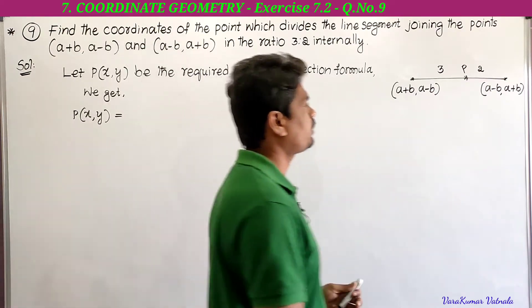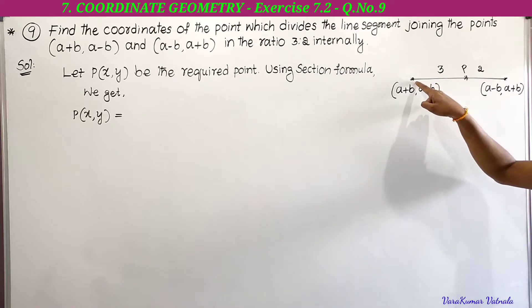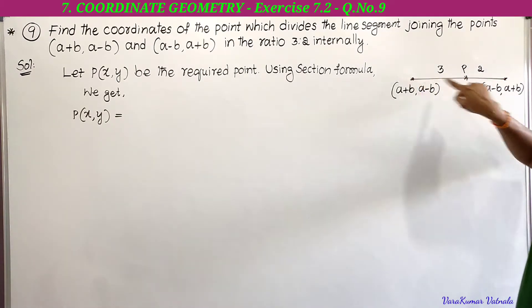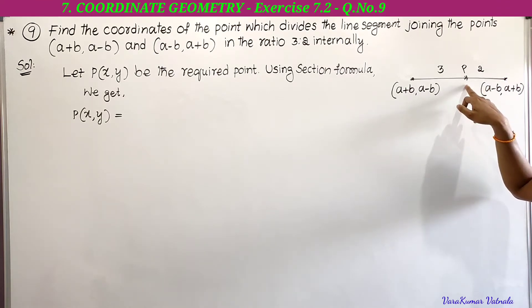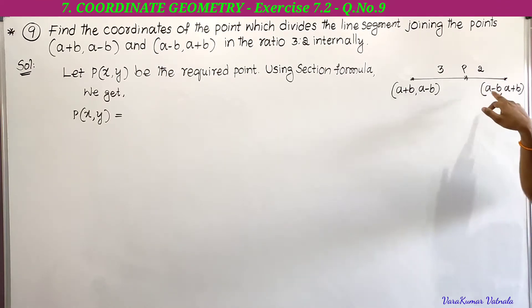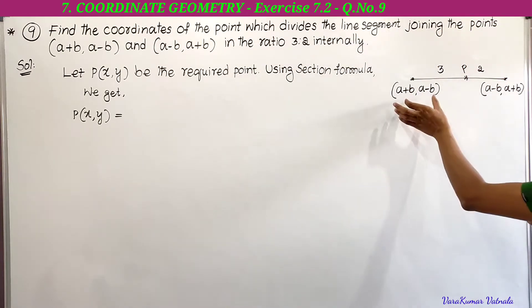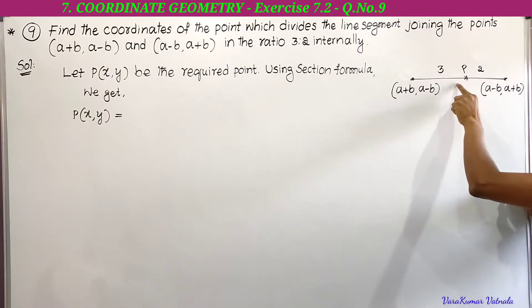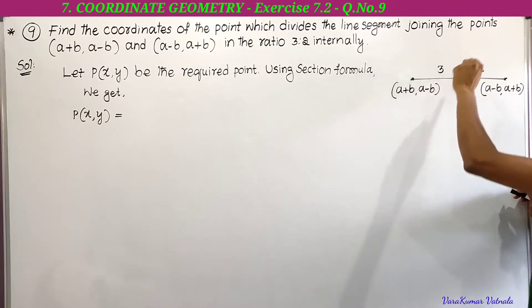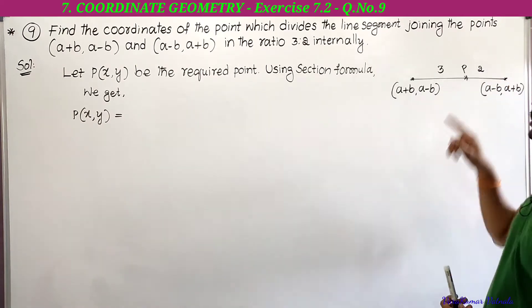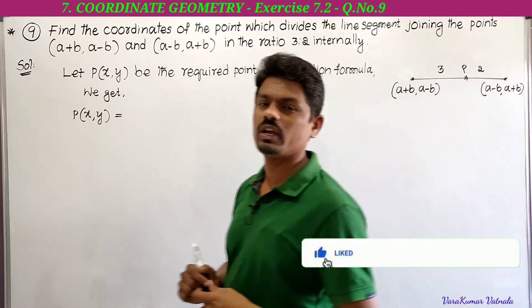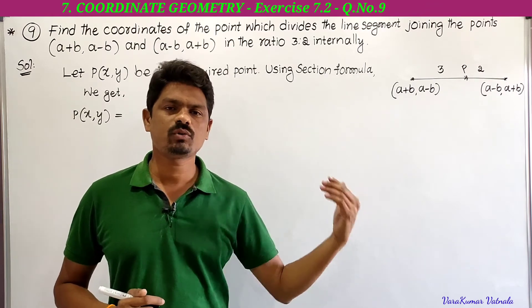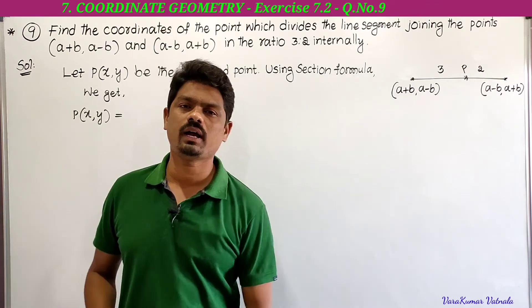Let the required point be P(x, y). So this is point (a+b, a-b) — let it be point A — and (a-b, a+b) — let it be point B. Point P(x, y) is dividing the line joining the given points in the ratio 3:2. Using the section formula: x = (m1·x2 + m2·x1) / (m1 + m2), y = (m1·y2 + m2·y1) / (m1 + m2).